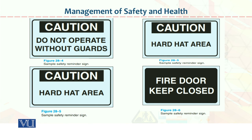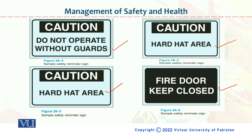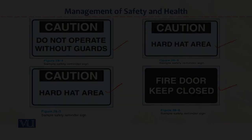More examples of visual awareness: 'Hard hat area,' 'Fire door keep closed,' 'Don't operate without guards,' 'Hard hat area.' These are basically examples of visual awareness. By visualizing these things and displaying them in the organization, you can control hazards and safety measures to a great extent.